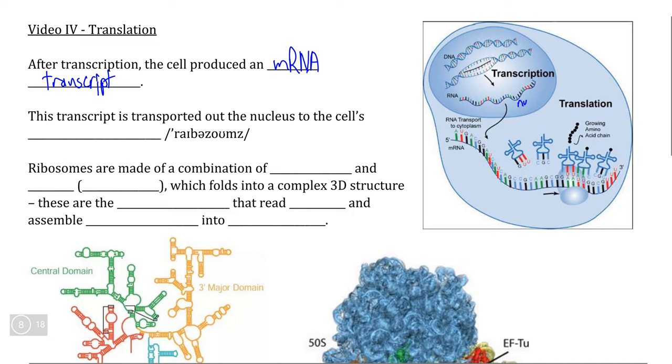that mRNA transcript is exported out of the nucleus through structures in the nuclear membrane that we call nuclear pores, which are simply holes in the nuclear membrane that are large enough to pass a large mRNA molecule out of it.